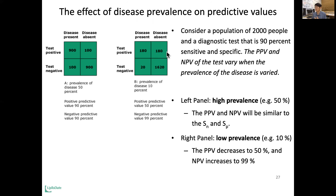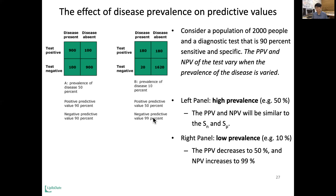With 10% prevalence, what's the PPV? It's about 50%, which means when disease prevalence is 10%, even if you get a positive test result, the chance of you really having the disease is only about 50%. What about negative predictive value? If the disease is rare and prevalence is low, the negative predictive value is almost 99%. So if you got a negative result, you can be almost certain that you won't have the disease.